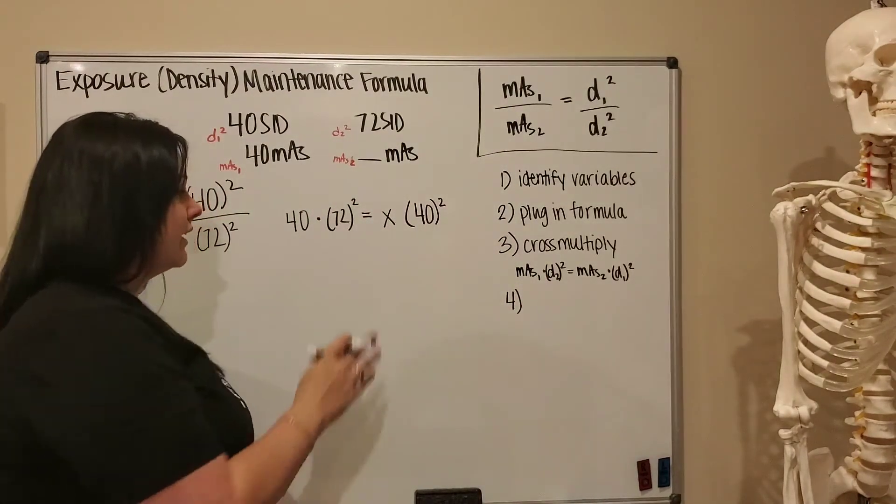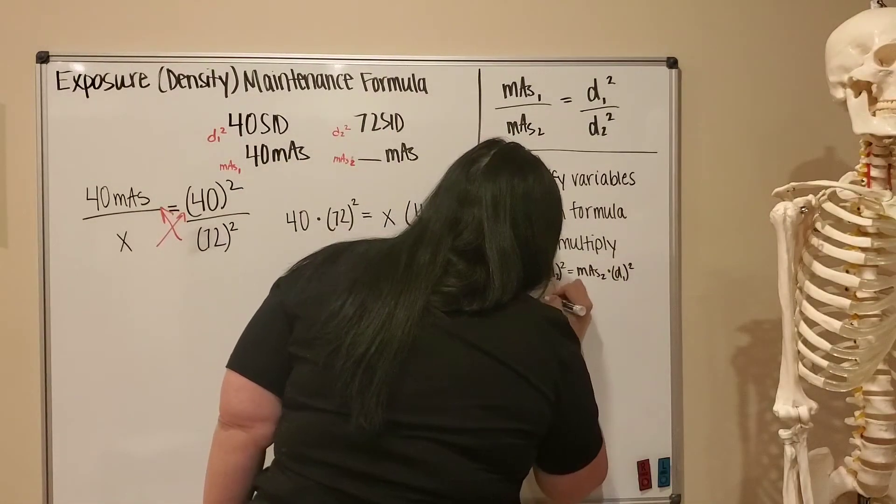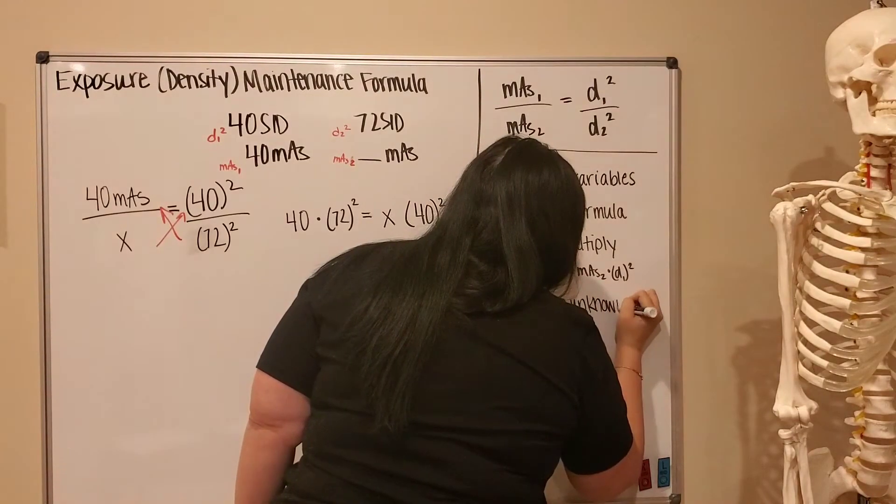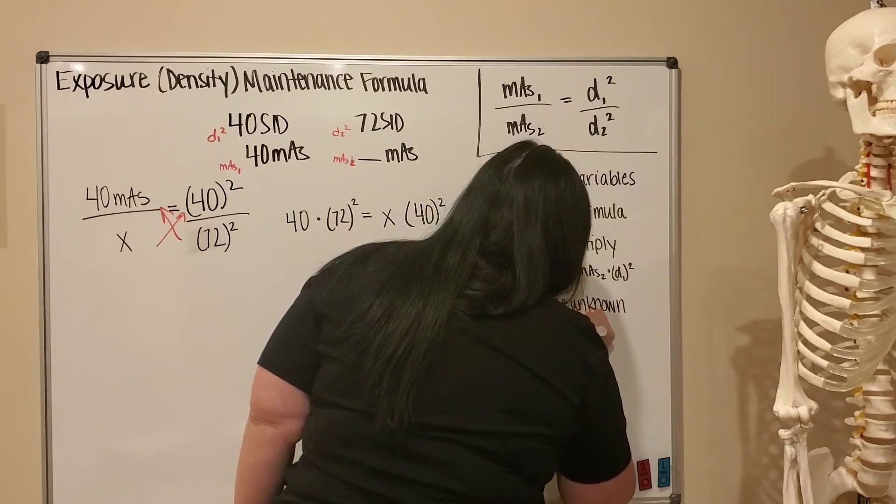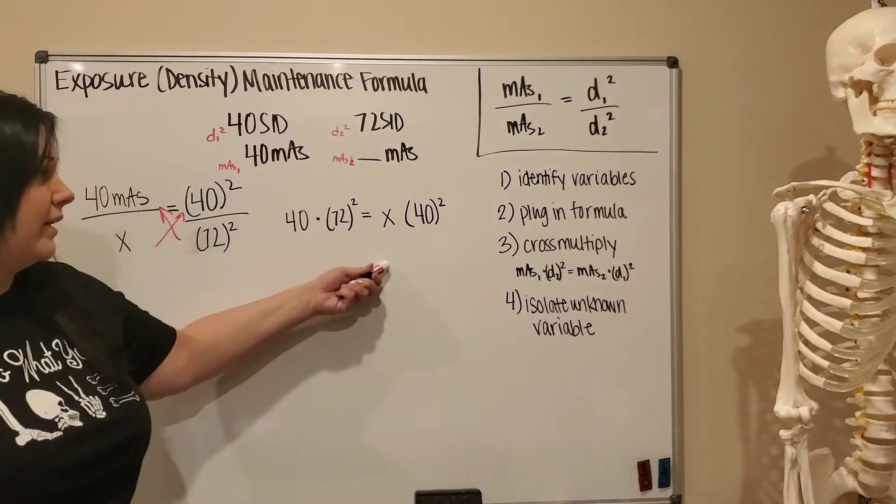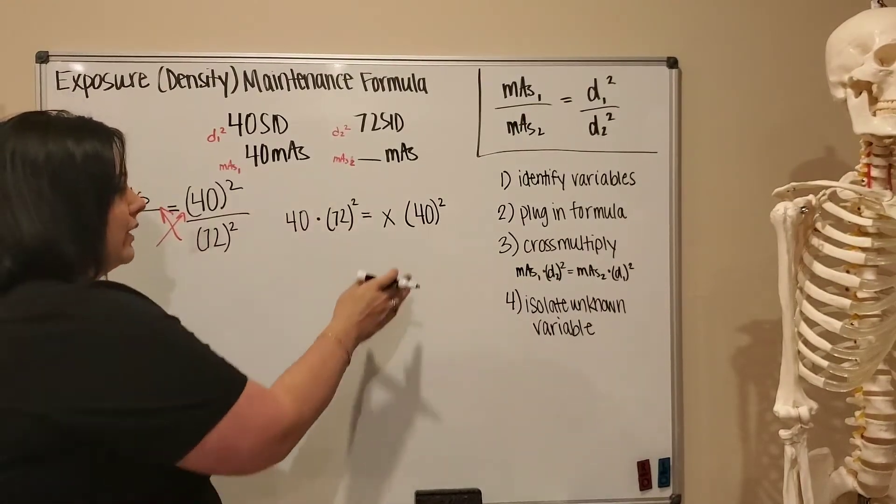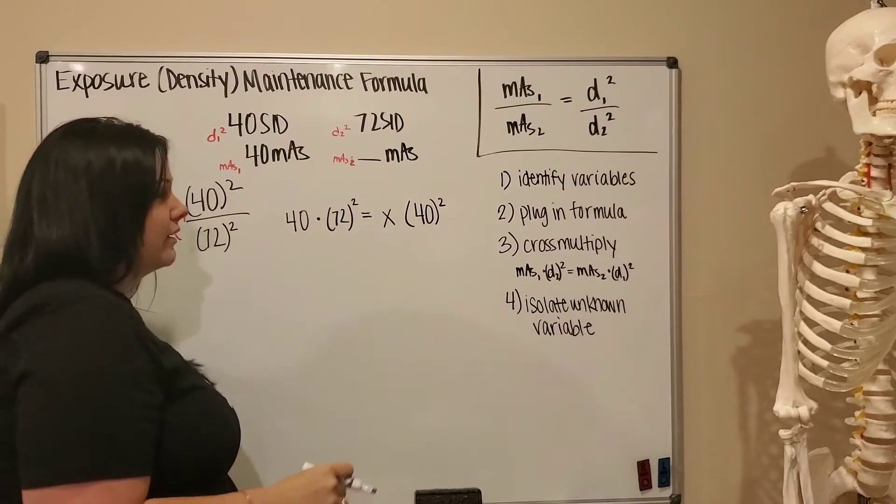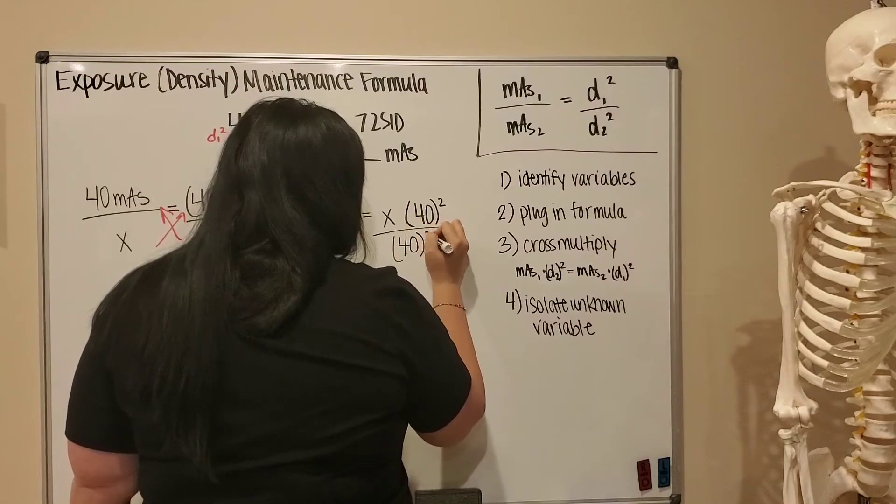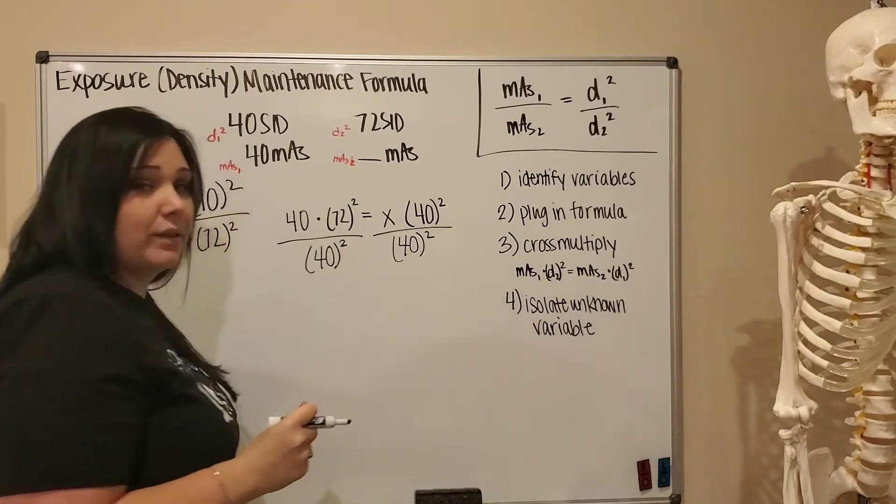Our next step is to isolate the unknown variable. What I mean by that is I want my x to be independent on the equal side, so I don't want anything else hanging out with that x. So what I'm going to do is divide out that 40 squared. And again, we're not actually doing any math here, we're just setting up our math problem.